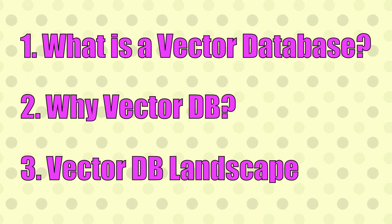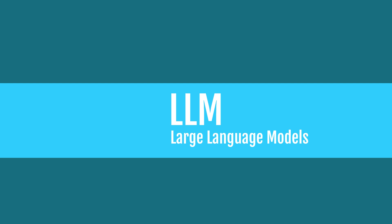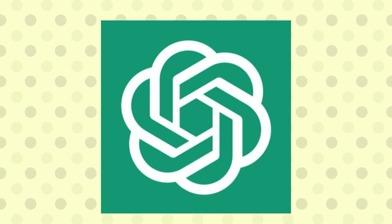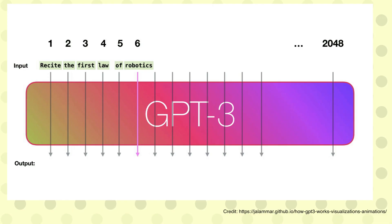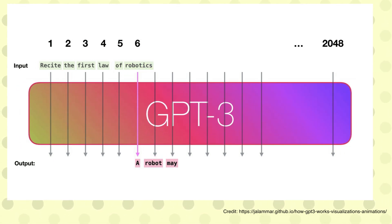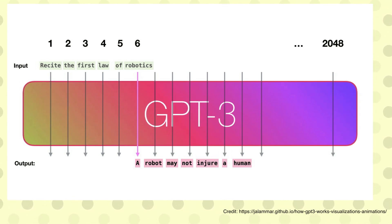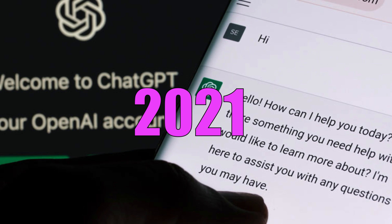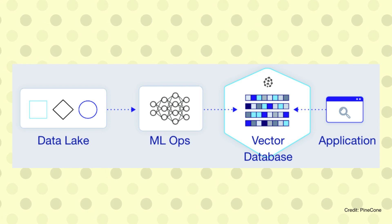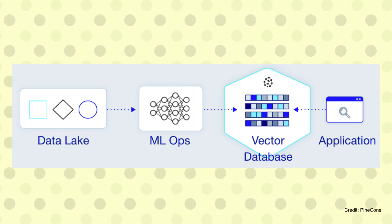To start with, let's ask the question: what is a vector database? Even before that, I would like to tell you what is a large language model. A large language model is a very big AI model that has a lot of dimensions and it can be used to predict the next word or answer a question based on the instructions given. The problem with a large language model is that its data is frozen at a given time period. For example, ChatGPT's data is from 2021 — it doesn't have 2022 or 2023. So how do you effectively use a large language model with current data is where you need a database, and that's where a vector database comes into the picture.